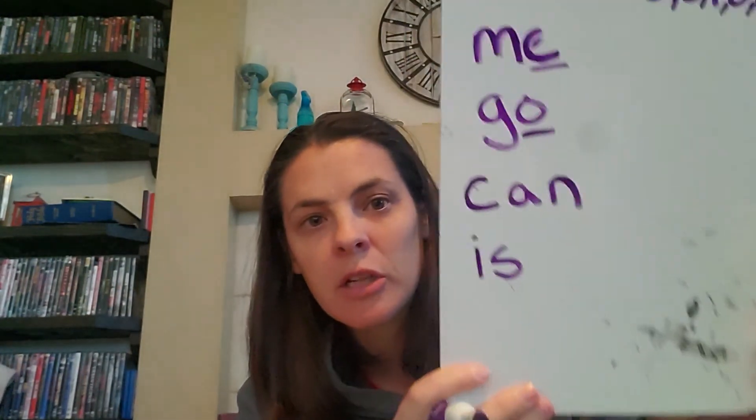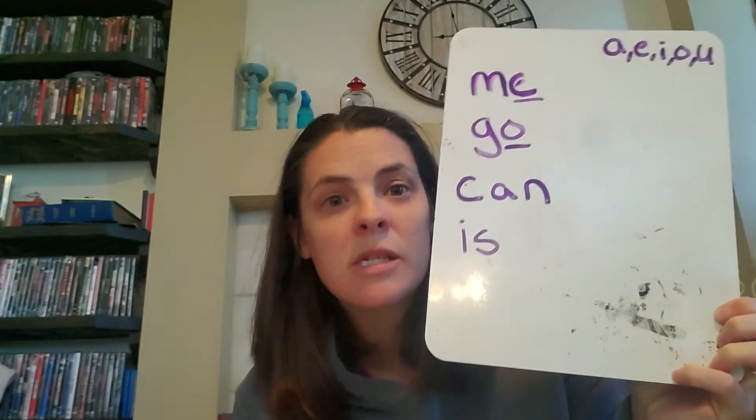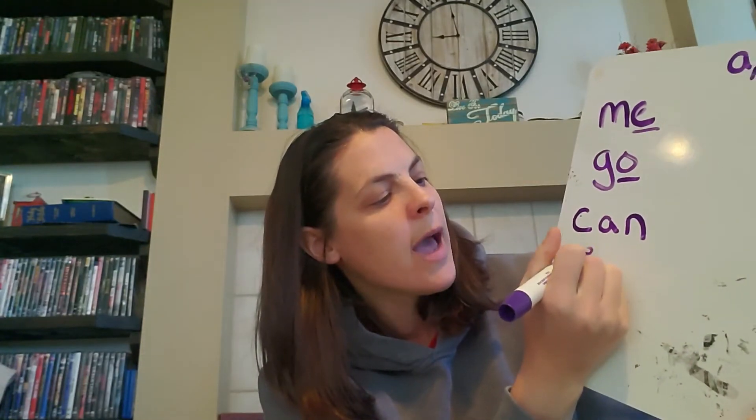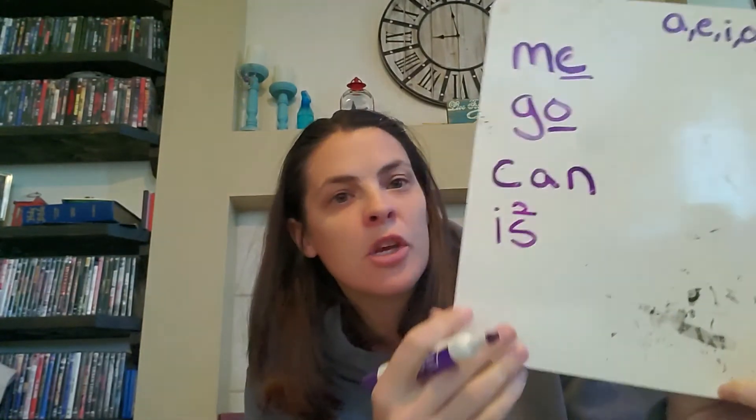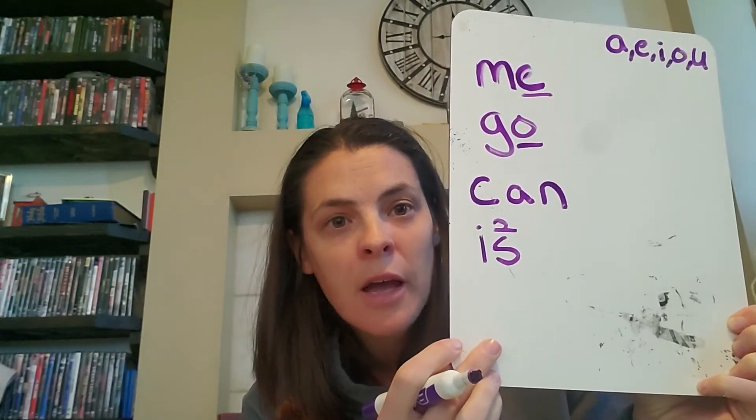Our next one is 'is.' I'm going to give you guys a minute to think about it. It should look like this. Now, our S makes what sound? That's right — S and Z. So it makes two sounds. Right above our S, we're going to want to add a two to show that it makes two different letter sounds: S and Z.